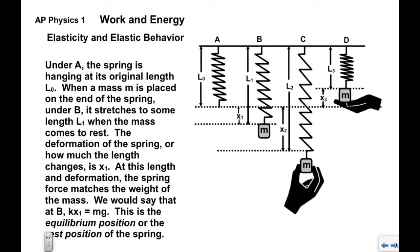When we place the mass m on the end of the spring, it's going to stretch the spring to some length L sub one. The mass will come to rest at some point below the original length of the spring. We see the deformation of the spring here is x one.